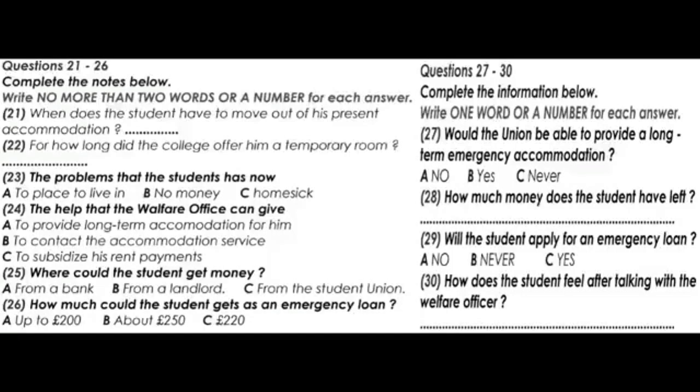Yes, it is usual in this country for landlords to ask for up to a month's rent in advance. Don't you have any money at all? Hardly any. I'm waiting for my grant cheque to be sent from the Philippines at the moment. It should have been here for me to collect when I arrived in Britain, but it seems to have been lost. You can apply for an emergency loan from the union if you want. The loan can be for up to £200 and we ask for a post-dated cheque for the same amount so that we can recover the money once you receive your grant cheque.